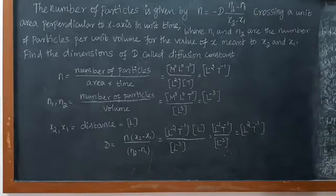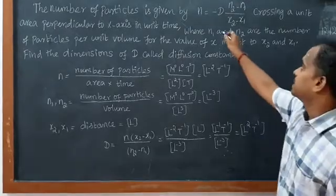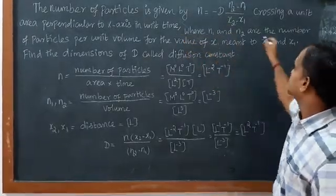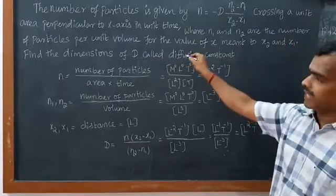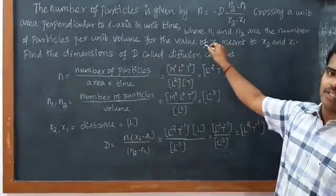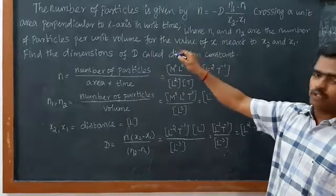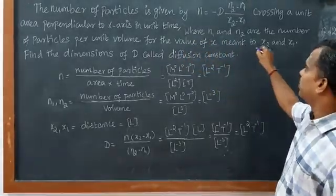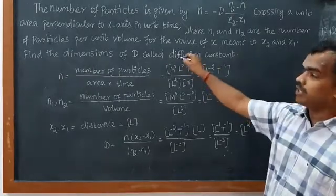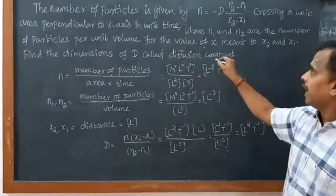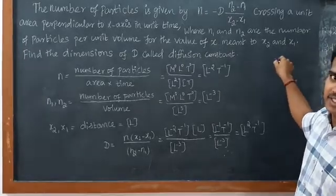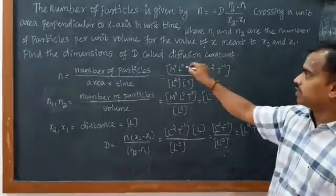From that given equation, they give us n. What is n? The number of particles crossing per unit area perpendicular to x-axis in unit time. So number of particles per unit area unit time. And n1 and n2 are the number of particles per unit volume, and x means distance. Find the equation of d.